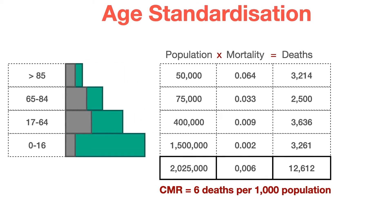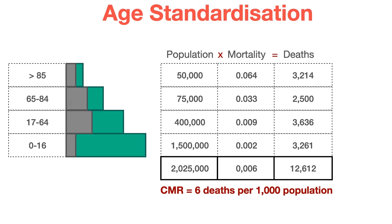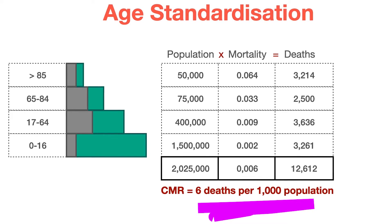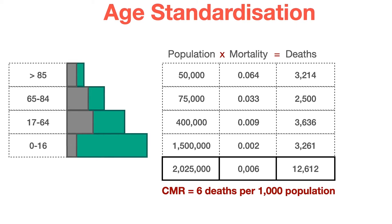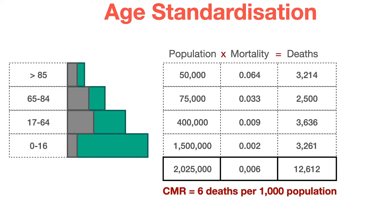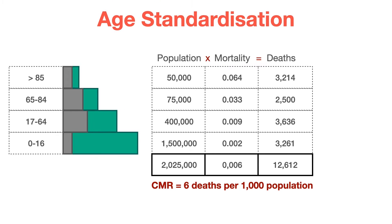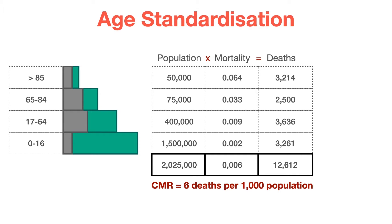Now let's see what happens if we change just the age structure of the population. Now we've got a crude mortality rate of about a third of that — six deaths per 1,000 population — and all we've done is change the age structure. In these two examples, the mortality rate in each age band has stayed exactly the same. The lesson here is that age is a confounding factor — you cannot compare the crude mortality rate of two populations that have got different age structures.